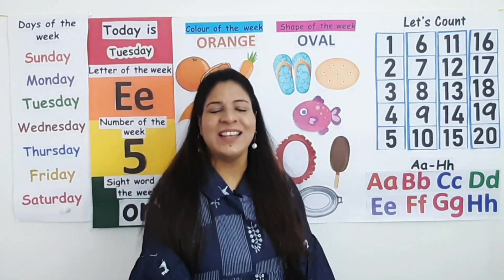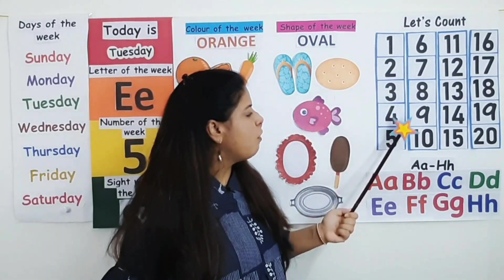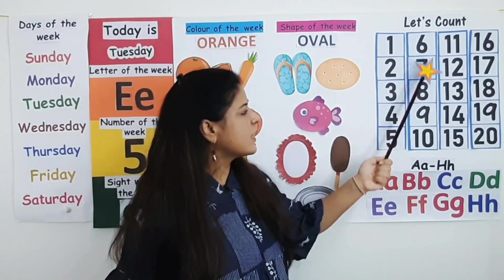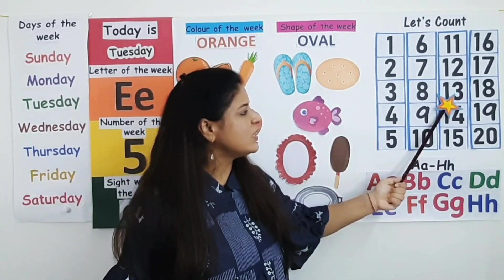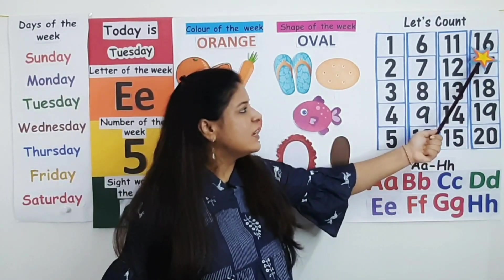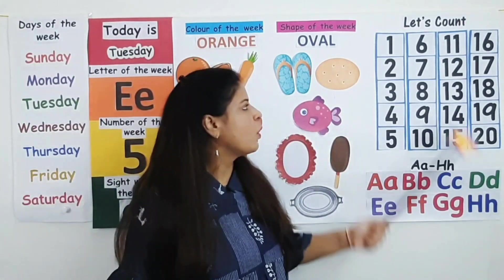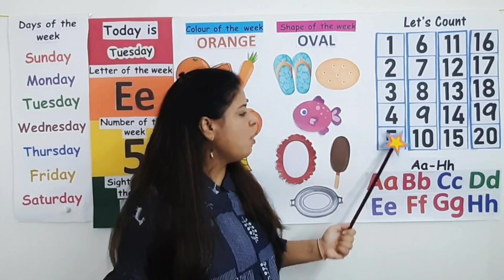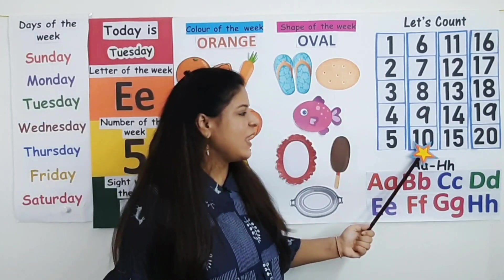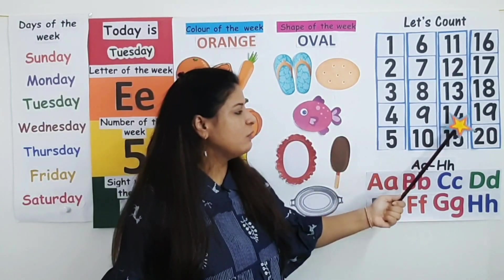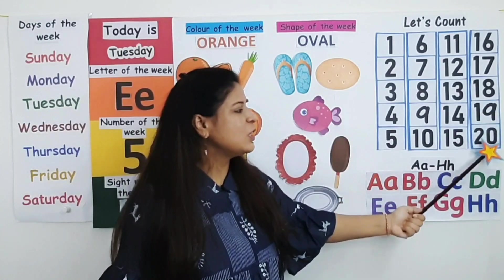Well done. So children, now it's time to count 1 to 20. Let's start — 1, 2, 3, 4, 5, 6, 7, 8, 9, 10, 11, 12, 13, 14, 15, 16, 17, 18, 19, 20. Now count along with me — 1, 2, 3, 4, 5, 6, 7, 8, 9, 10, 11, 12, 13, 14, 15, 16, 17, 18, 19, 20. Well done.